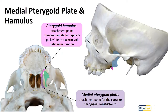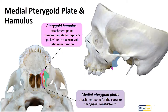The pterygoid hamulus acts as an attachment point for the pterygomandibular raphe, which is a condensation of pharyngobasilar fascia. It also acts as a pulley for the tensor velae palatini muscle and its tendon. The tensor velae palatini muscle sits here, and then its tendon runs immediately toward the palatine aponeurosis. This sharp angle is where that muscle wraps around the pterygoid hamulus. We'll see more about the muscles of the palate in a future session, but keep in mind the pterygoid hamulus as we move forward into that region.